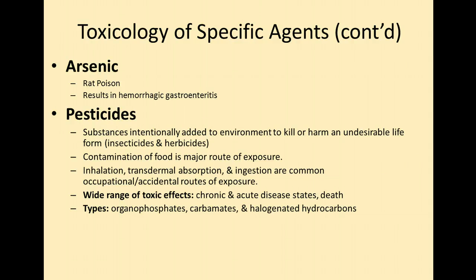Next is arsenic — we talked about that with trace elements. It is a non-essential element, and it is used in rat poisoning. It can result in hemorrhagic gastroenteritis, causing a lot of problems internally.